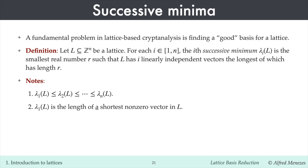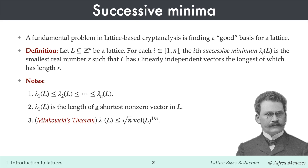I emphasize 'a' shortest vector rather than 'the' because a lattice has more than one shortest non-zero vector — indeed, if v is a shortest non-zero lattice vector, then so is minus v. A classical result of Minkowski states that the length of a shortest non-zero vector in a lattice is at most the square root of n times the n-th root of the lattice volume. This gives an upper bound on the length of a shortest non-zero lattice vector. However, determining this length is a difficult problem, let alone actually finding a lattice vector of that length.